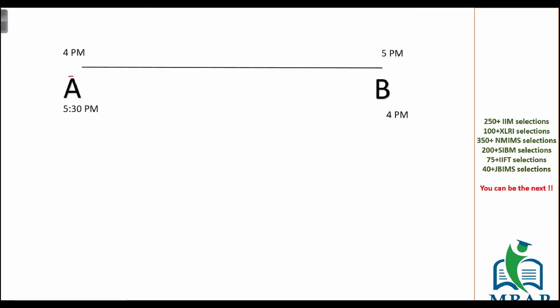The question says: there are two people A and B running in opposite directions. A can cover the entire distance in one hour — he leaves home at 4 PM and reaches his destination by 5 PM. For B, he leaves at 4 PM and reaches at 5:30 PM. They will meet at some point. The question is: at what time will they meet on the given line?